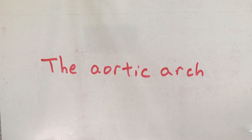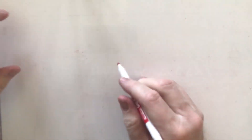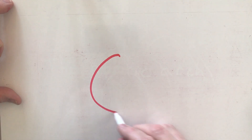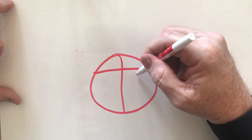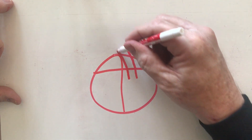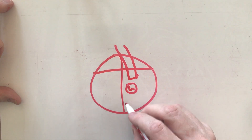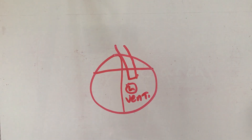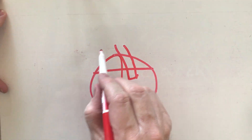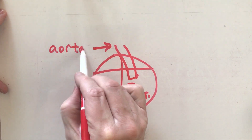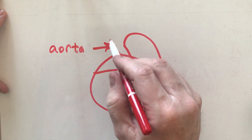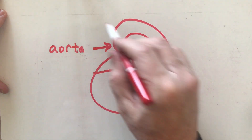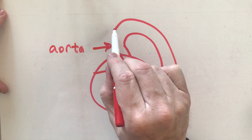In this video we're going to talk about the aortic arch. If you remember when we were talking about the heart, coming off of the left ventricle we had the aorta. The aorta is going to make a quick U-turn and then head down into the body, but before it does it's going to have some branches coming off of it.